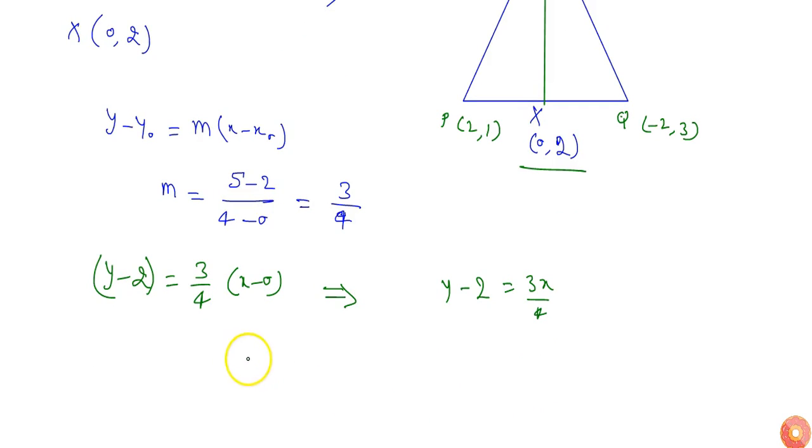If I simplify the equation, I will get 4y minus 8 equals 3x, or I can say 3x minus 4y plus 8 equals 0. So this will be our equation of the median.